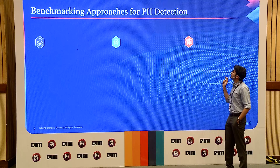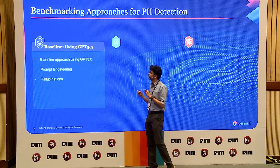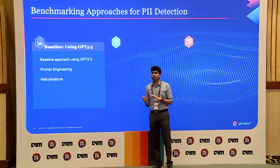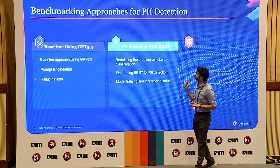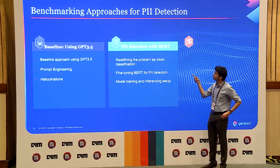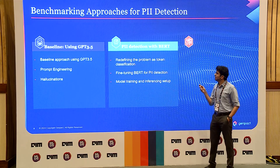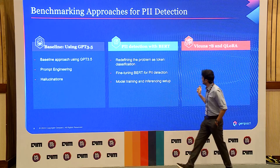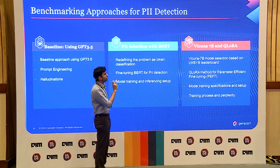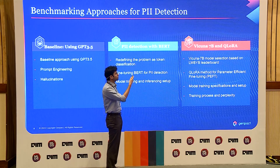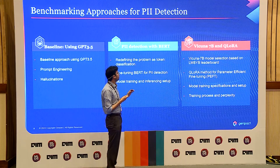Now we come to the crux — the approaches. The first approach is the baseline: you use ChatGPT, do some prompt engineering, do some temperature tuning, and get the results. Next, we do the same thing with BERT, converting emails into a token classification problem. And the last one is what we are here for: we use the Vicuna 7 billion model and the QLora fine-tuning technique. We'll discuss why we chose the model, what QLora is, the training and inferencing setup, and what GPU we used.